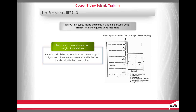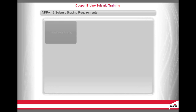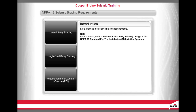Since braces on the mains and cross mains also support the weight of branch lines, a special calculation must be done to show that the braces can support not just the load of the main or cross main that it is attached to, but also all of the attached branch lines. This calculation is referred to as the zone of influence calculation. NFPA 13 also requires mains and cross mains to be braced both laterally and longitudinally. For full details, refer to Section 9.3.5 Sway Bracing Design in the NFPA 13 Standard for the Installation of Sprinkler Systems.